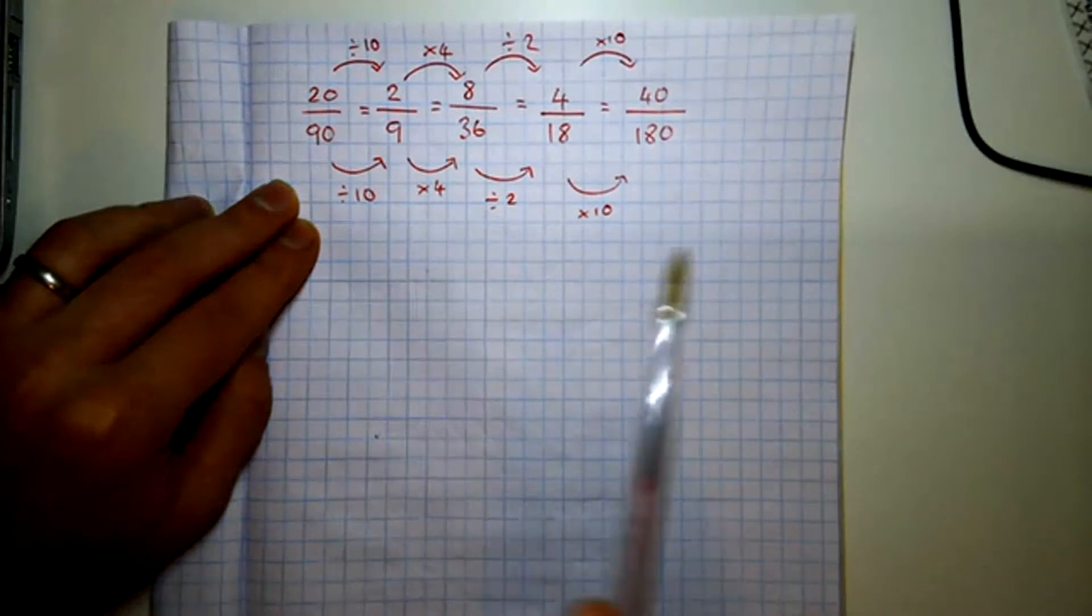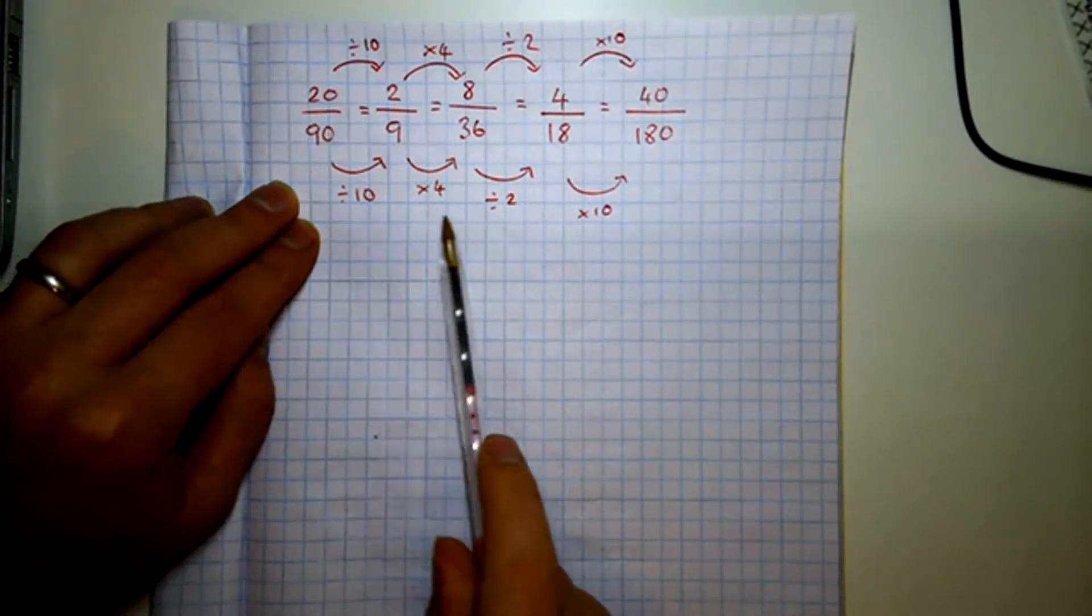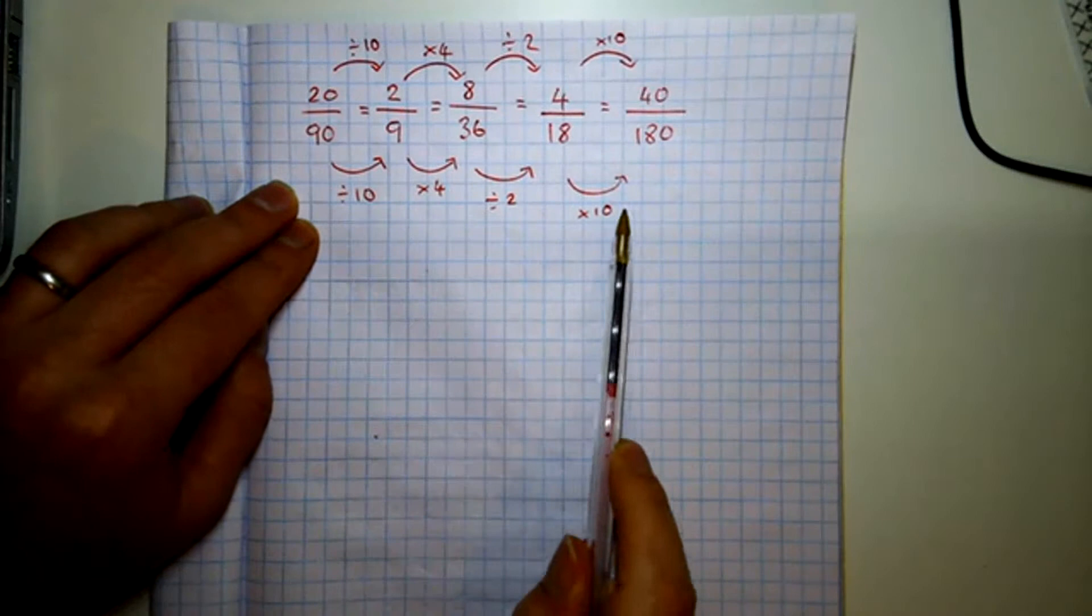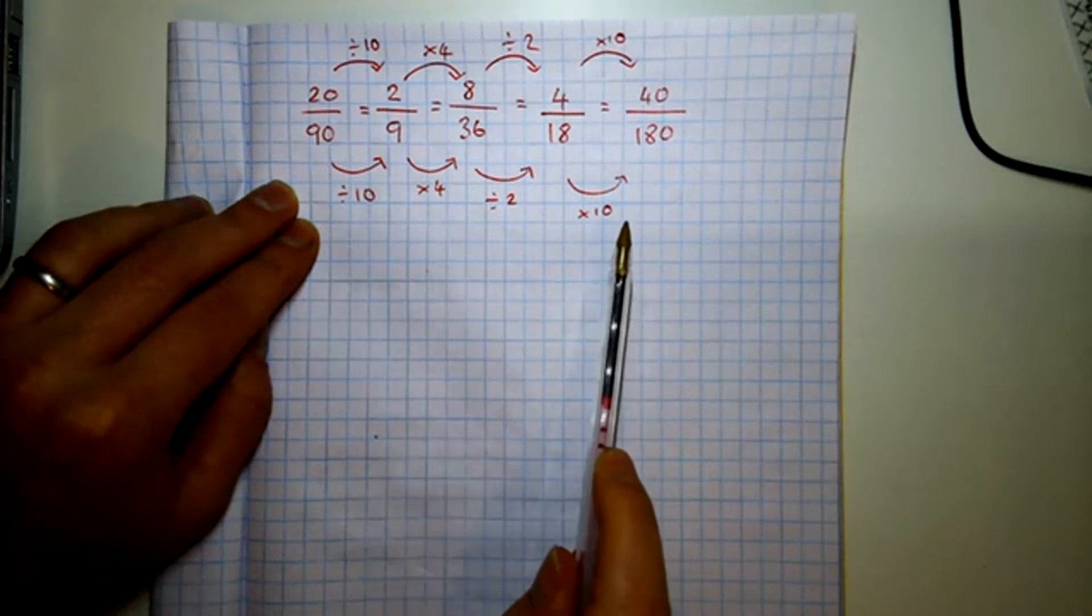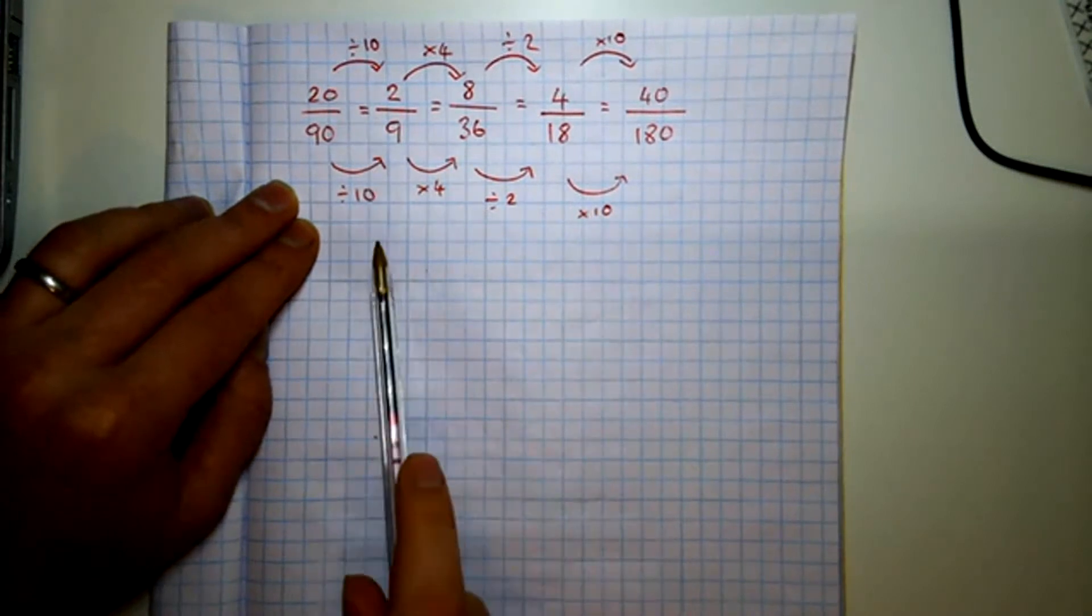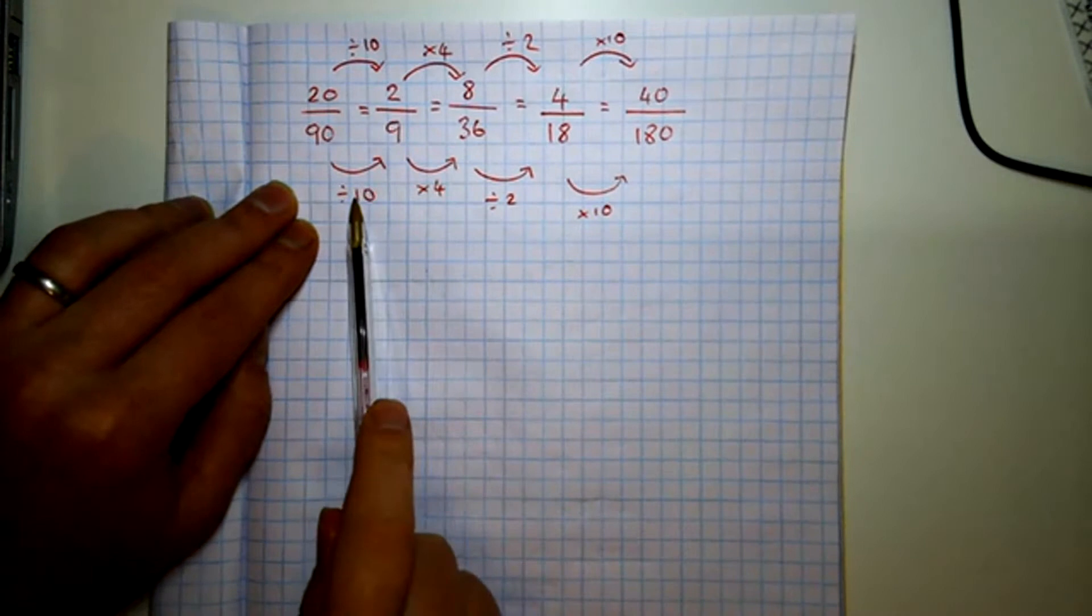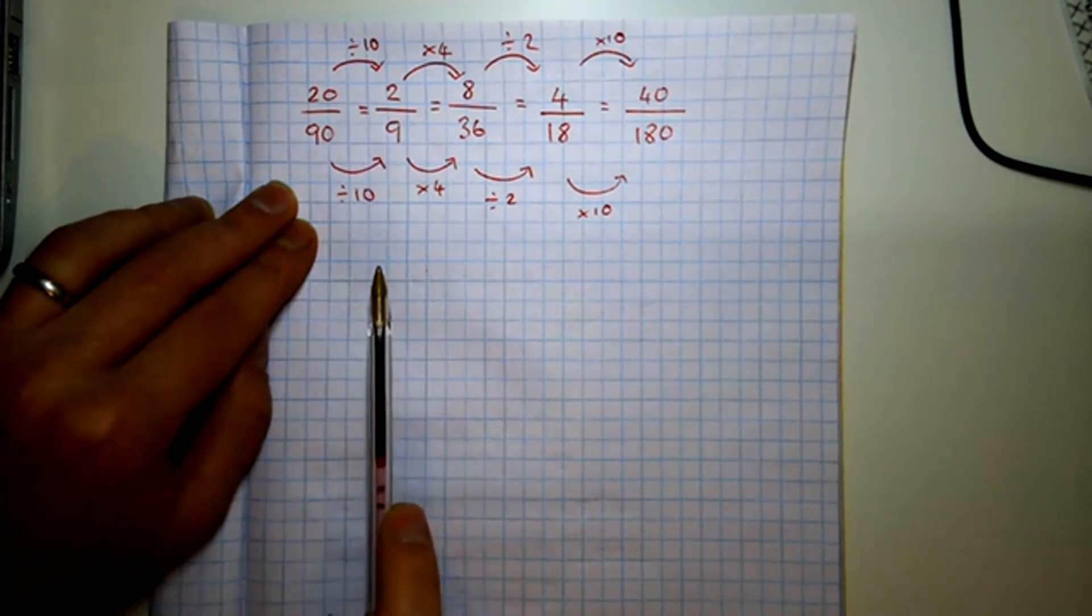Now two important points. The first point is you can only times and divide to find equivalent fractions. You can't add and subtract. You have to do the same to the top as you do to the bottom. So if I divide by 10 on the bottom, I have to divide by 10 on the top.